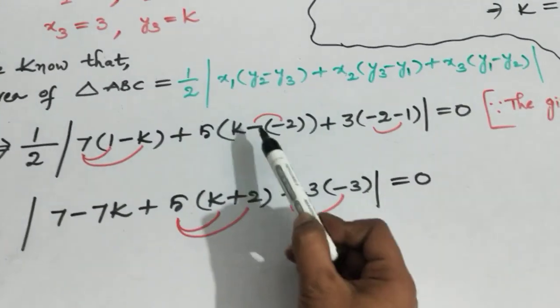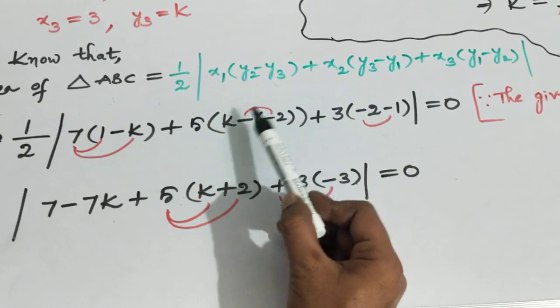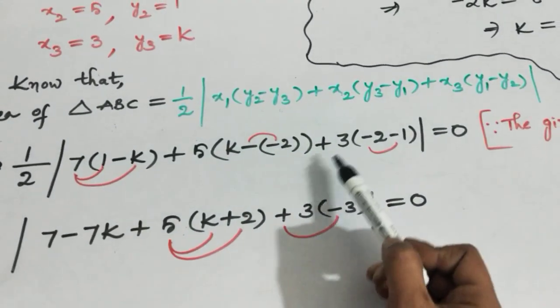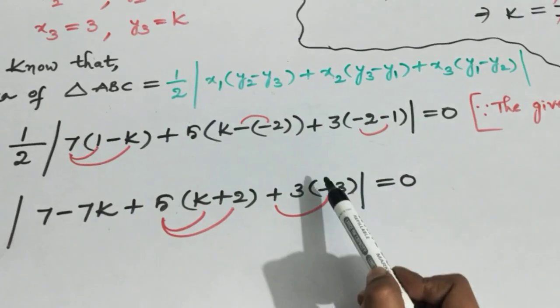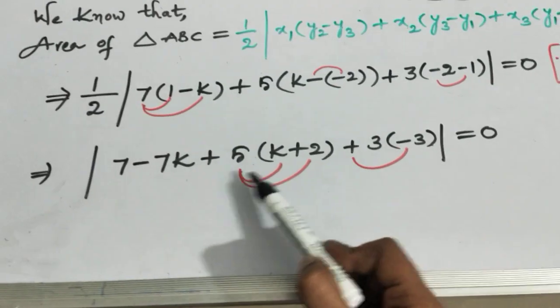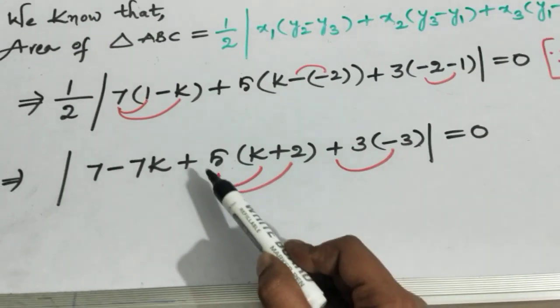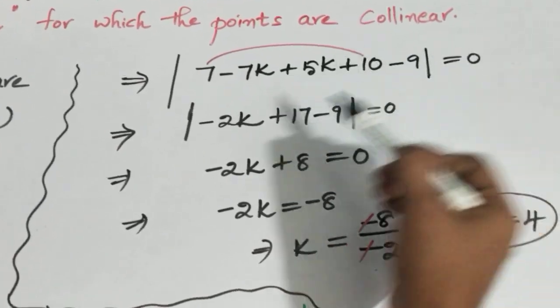Plus 5 times (k + 2): that gives 5k plus 10. Then plus 3 times (-2 - 1). Minus into minus gives plus 2. Next: 3 times (-3) gives -9.